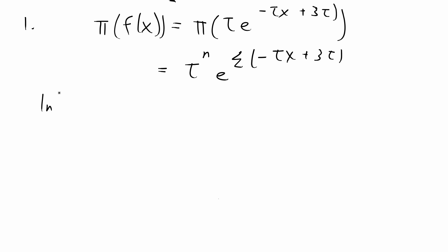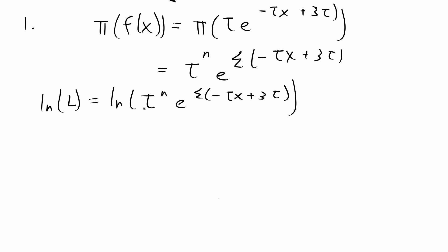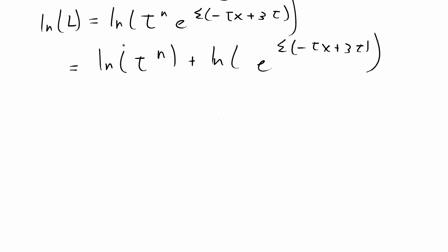Next, to make it easier to calculate by hand, we're going to take the natural log of the likelihood. We take the natural log of tau to the n times e to the sum of negative tau x plus 3 tau. When you multiply terms and take the natural log, that's equivalent to taking the sum of the natural logs. That's going to be equal to the natural log of tau to the n plus the natural log of e to all of those terms.